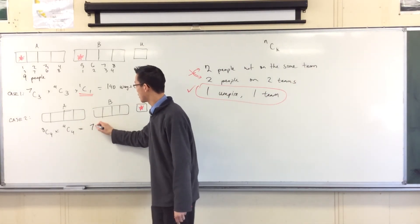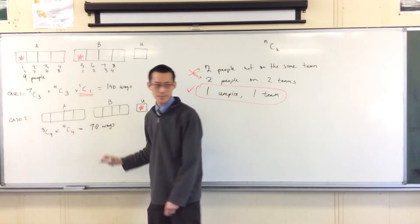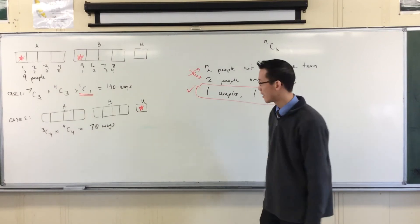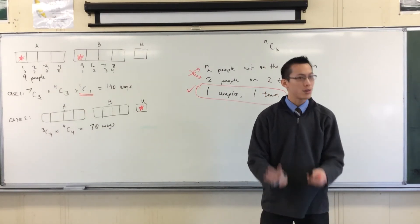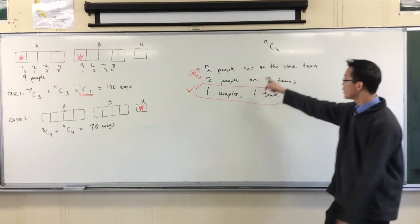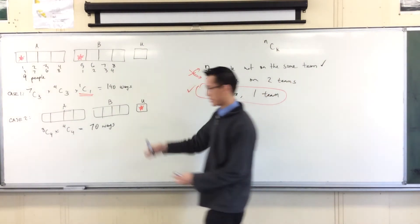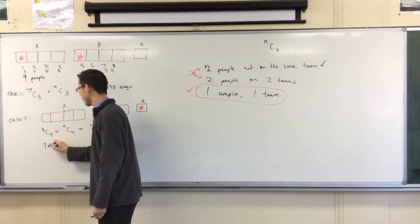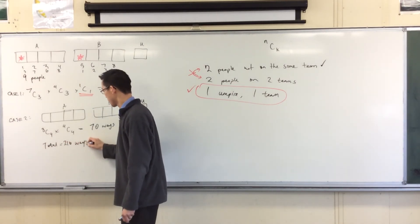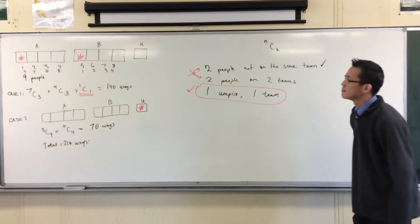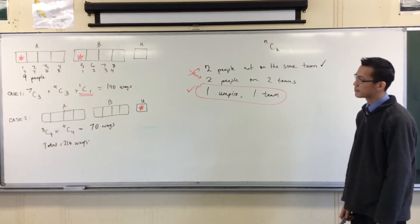And you can work this out. I'm pretty sure it's 70 ways. Eight choose four. I think it's 70. You can even think of that row in Pascal's triangle. So therefore, your total number of ways arranging to meet this condition is case one plus case two. The total is 210 ways. Happy with that?